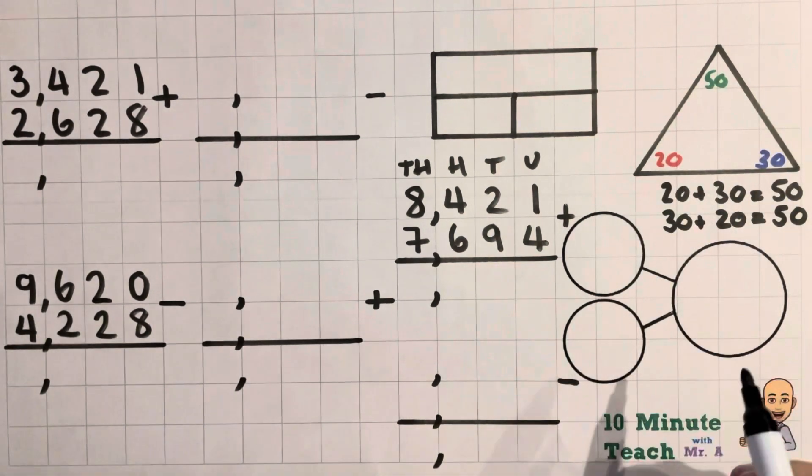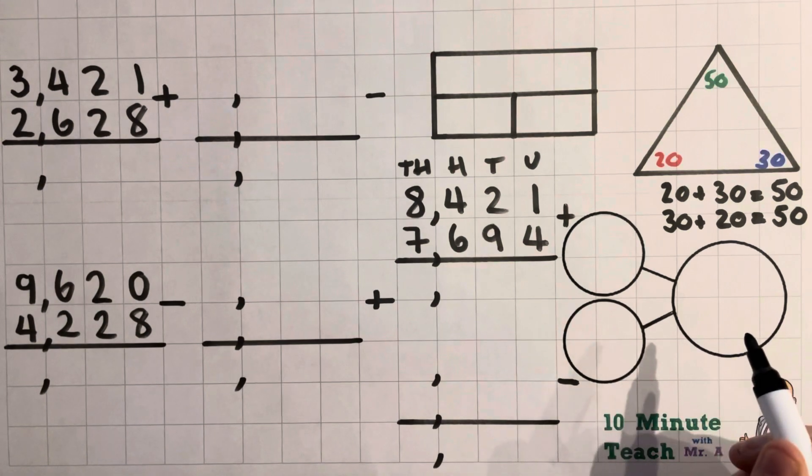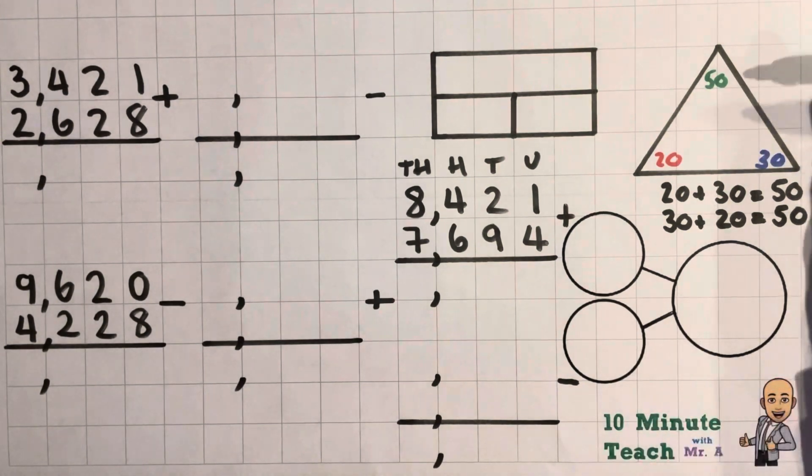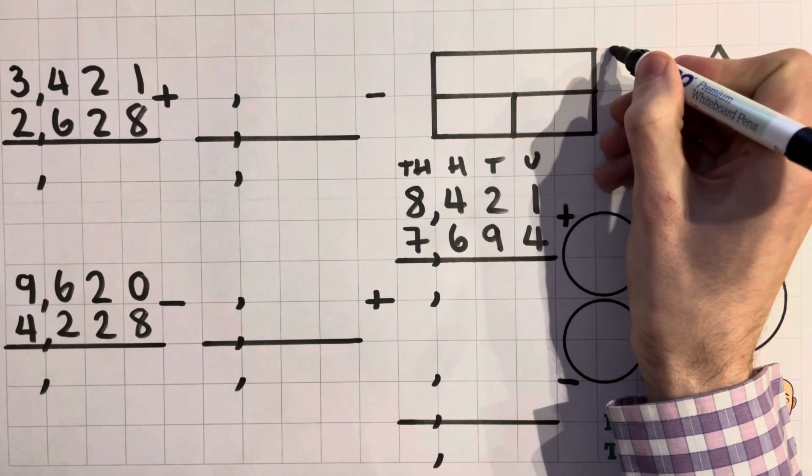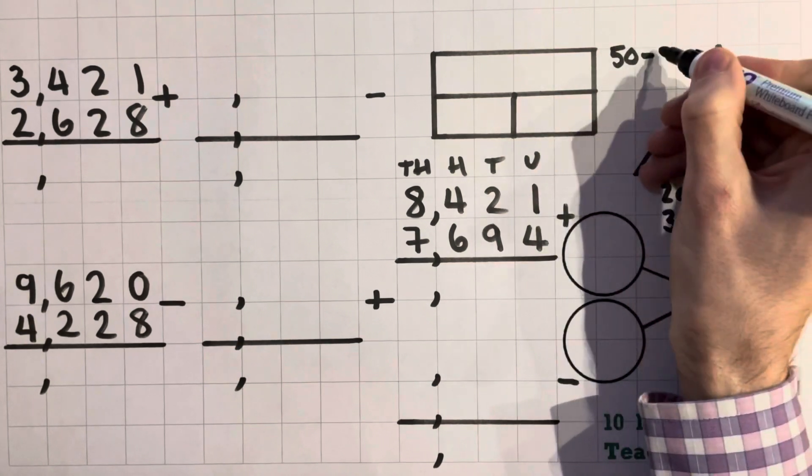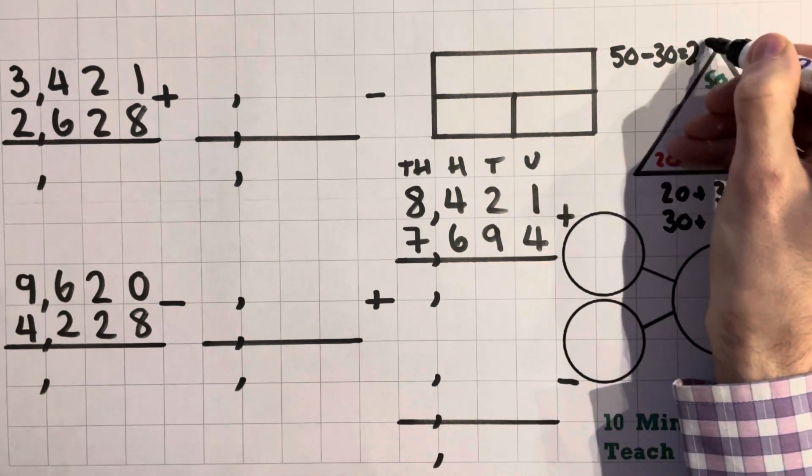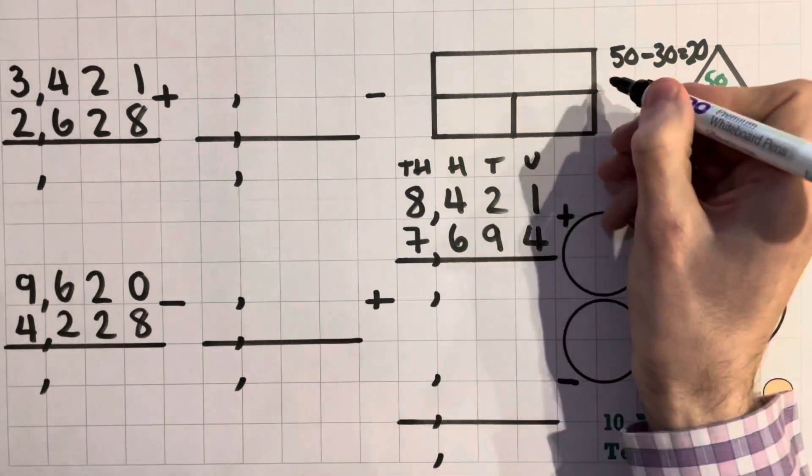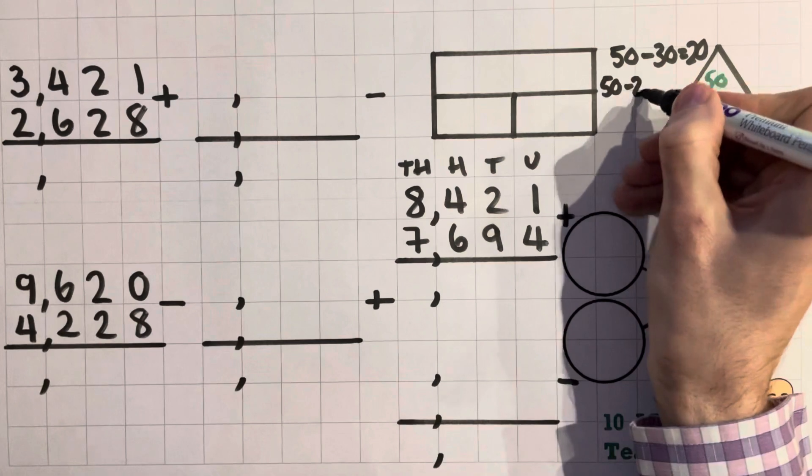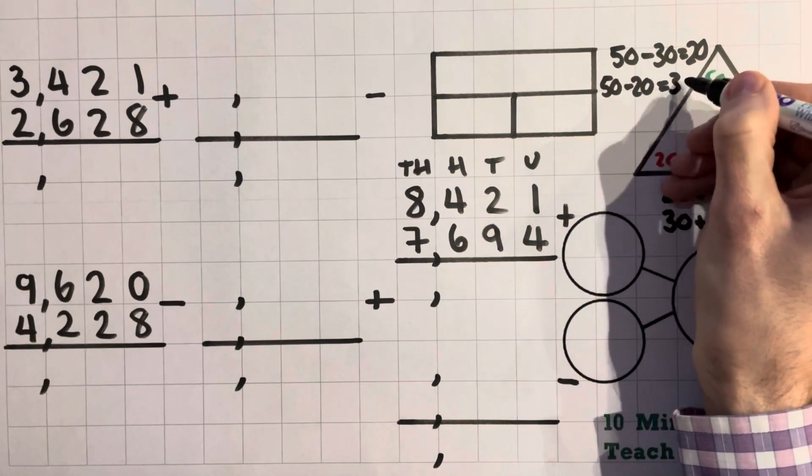Now then let's see if we can write it in a slightly different way. So I can use this triangle to help me out with some subtractions for these numbers as well. So 50 take away 30 equals the 20 and also I have 50 take away 20 equals 30.